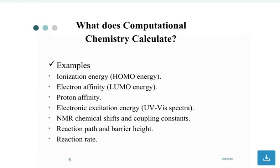Examples of what Computational Chemistry calculates: ionization energy, LUMO energy, electron affinity, HOMO energy, proton affinity, electronic excitation energy, UV-visible spectroscopy, NMR chemical shift and coupling constant, reaction path and barrier height, and reaction rate.